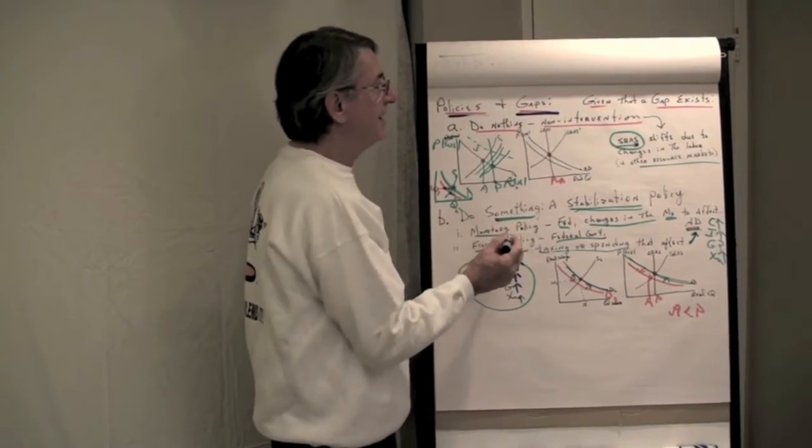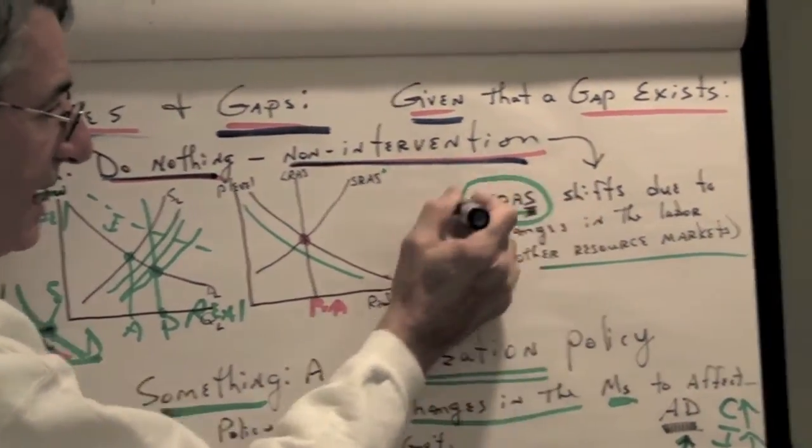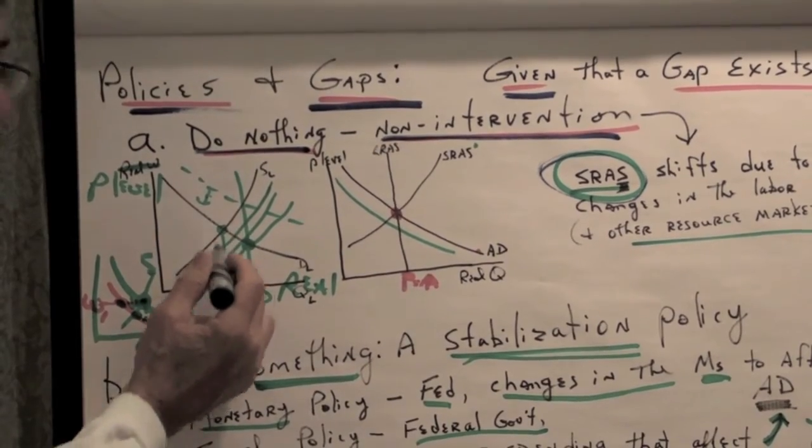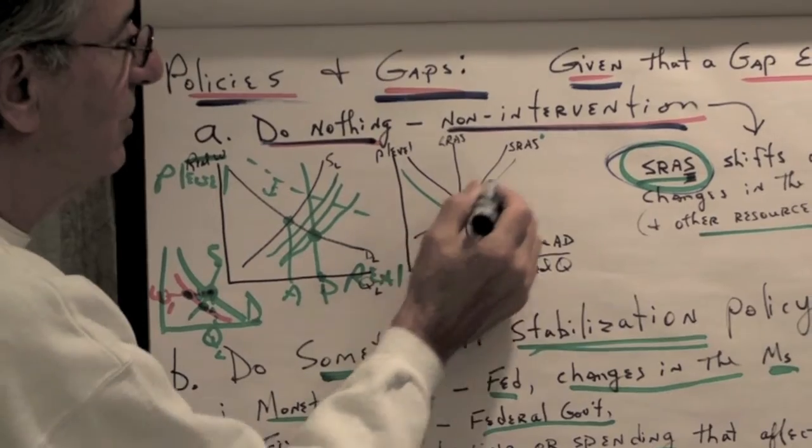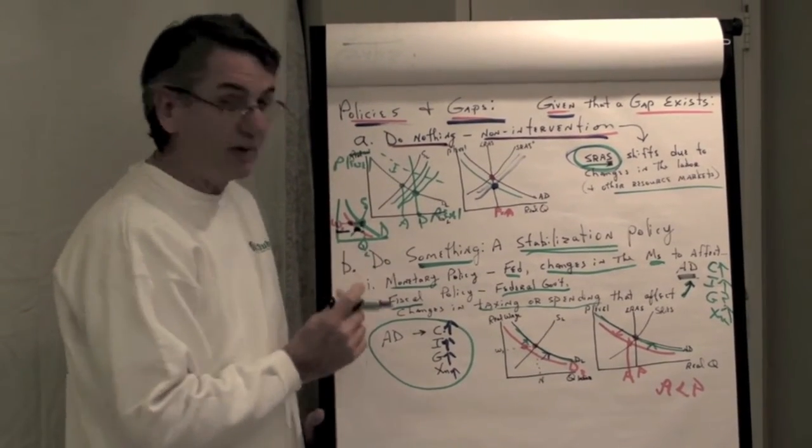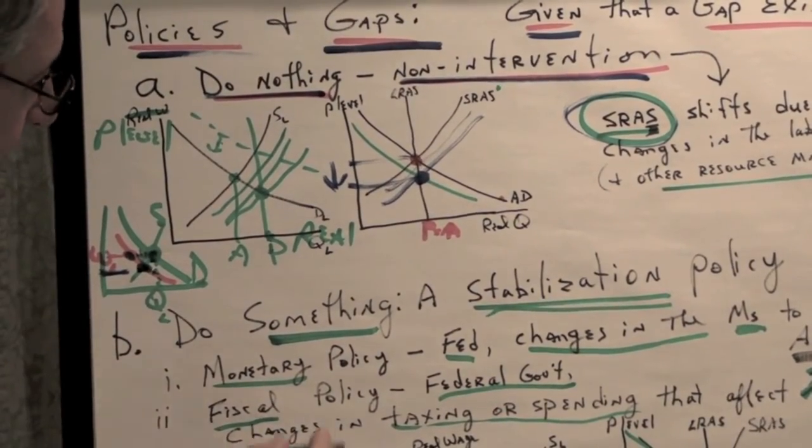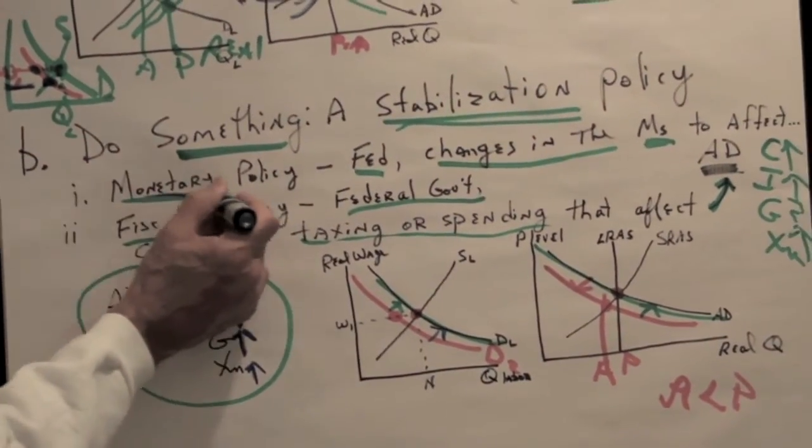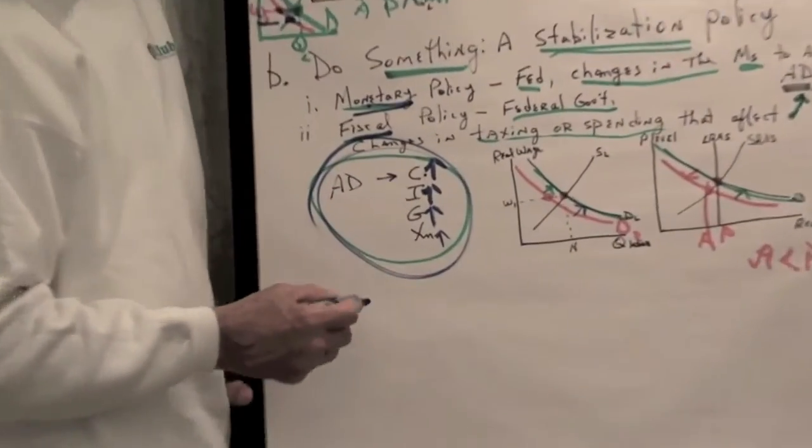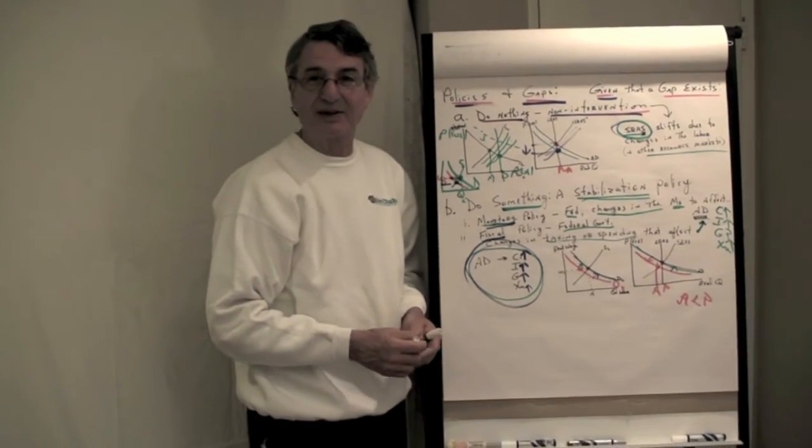So that's it. Policies and gaps. If we have a gap, what do we do about it? We can do nothing. In which case, that would be a non-intervention policy. We would just let things happen. And because of the surpluses in the resource markets, resource prices go down. That shifts short-run aggregate supply to the right and closes the gap. And when the gap is closed, the resource markets are back in equilibrium. At a lower wage, but back in equilibrium. And it turns out, with a non-intervention policy, the price level goes down a bit as well. Now, if we do something, that's a stabilization policy. Stabilization policies come in two flavors, monetary and fiscal policy. And they both work to act on aggregate demand, to shift the aggregate demand in the correct direction to close the gaps. There we go. Thank you very much. Bye, Edgar.